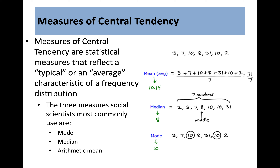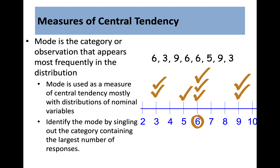Measures of central tendency are statistical measures that reflect a typical or average characteristic of a frequency distribution. The three measures social scientists most commonly use are mode, median, and arithmetic mean. The mode is the category or observation that appears most frequently in the distribution, and is used as a measure of central tendency mostly with distributions of nominal variables. Researchers identify the mode by singling out the category containing the largest number of responses. For example, with a set of numbers containing three sixes, two nines, and two threes, the mode is six.